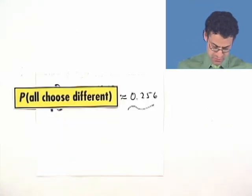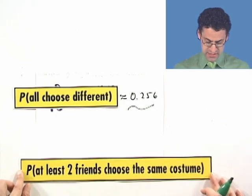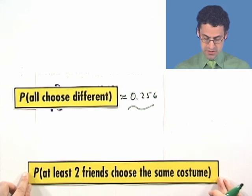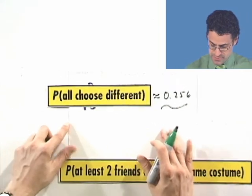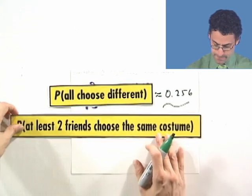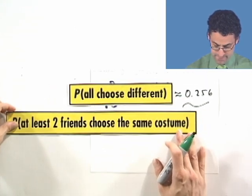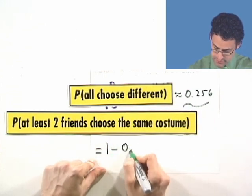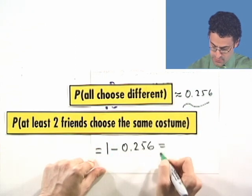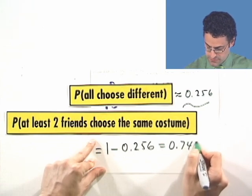That wasn't the question. The question was the opposite. At least two friends choose the same costume. So the answer to this question is going to, in fact, be equals one minus this probability. And what is that? Well, that works out to be 0.744.